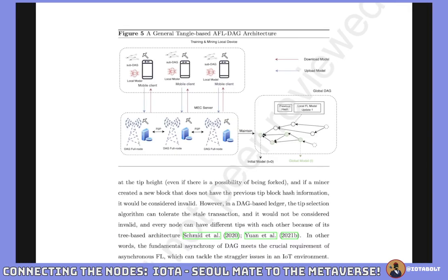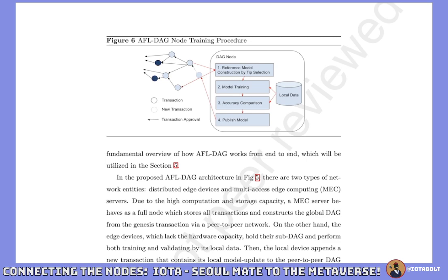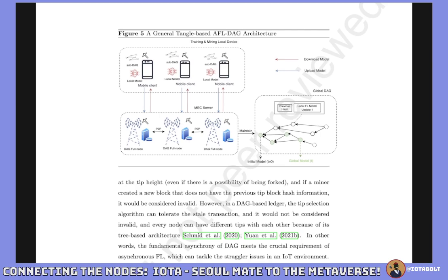It works like this: every edge device or DAG node creates its own sub-DAG consisting of transactions and approvals via its peer-to-peer network. From the node-specific sub-DAG, each device selects its own tip selections by the predefined tip selection algorithm and builds the reference model on which it will train. The device then starts training its local model using privacy-sensitive data and builds the local model update. Then the edge device validates that local model by comparing its accuracy with the existing reference model.